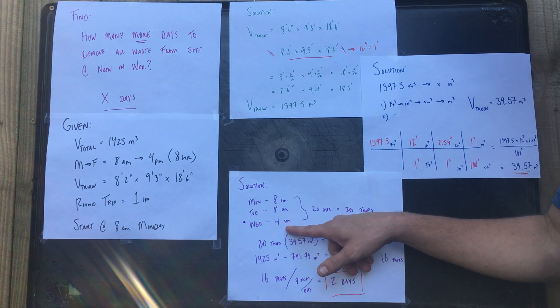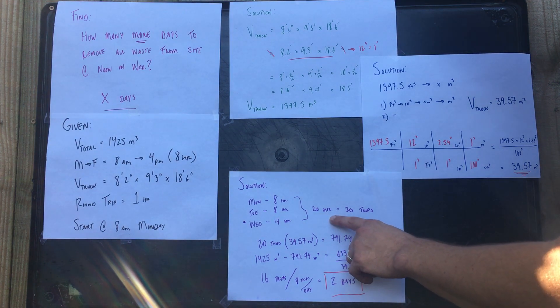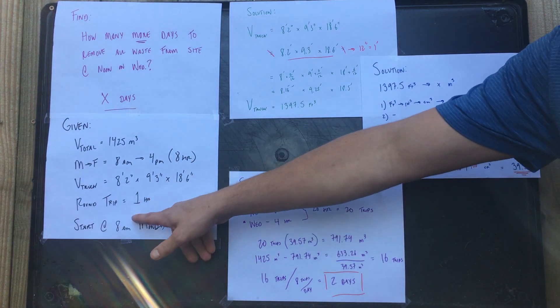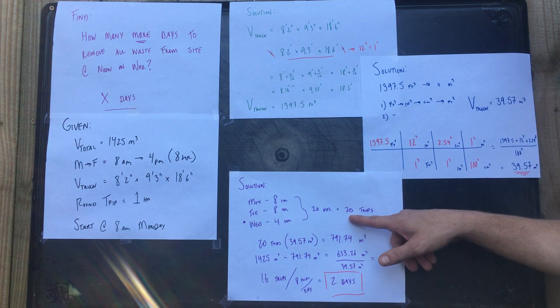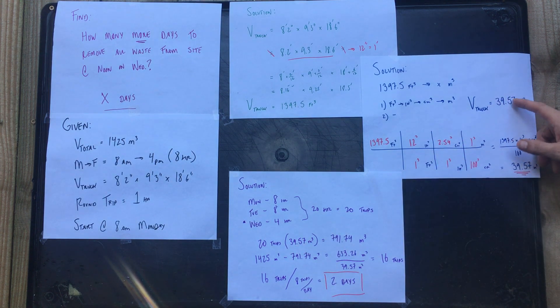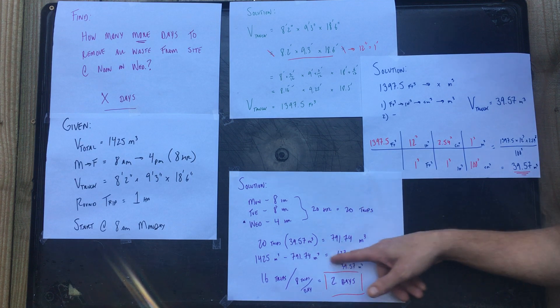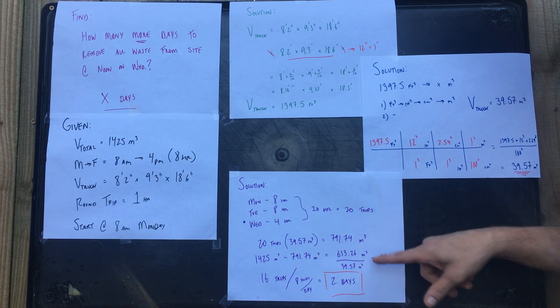So that's only a four-hour day. When we look at all those different hours, we have 20 hours total. Well, if there is one hour per trip, that means that gives us 20 trips. So if we have 20 trips and the volume of our truck is 39.57 cubic meters, we found out from here that gives us a total of that much waste we've been able to move since Monday.